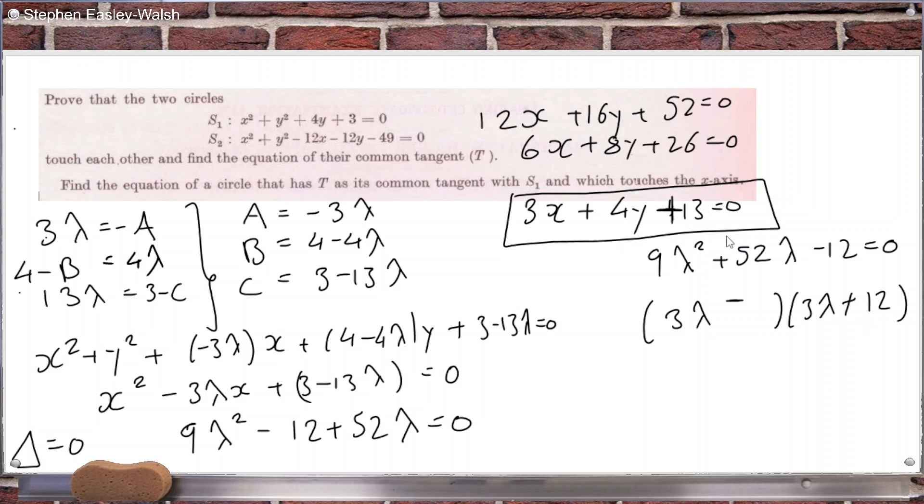Okay. I decided to be a lazy so-and-so and use the minus B formula. I just don't have the energy to factorize right now. So you get lambda equals 2 over 9, or lambda equals minus 6.